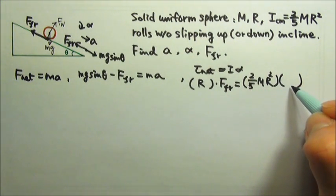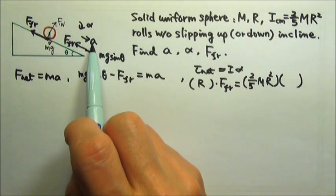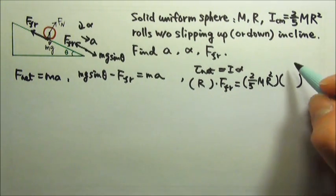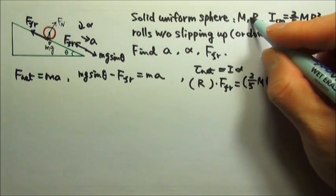And what is alpha? Since it's rolling without slipping, alpha and a are related. a is r times alpha, so we can replace alpha with a over r, the same r.